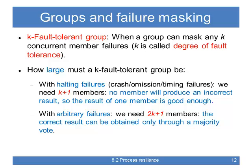The question is how many processes do you need to create a K fault tolerant group — a group that can mask any K concurrent member failures, where K is the degree of fault tolerance. If you only have halting failures — crash, omission, timing failures — you need K plus 1 members, because no member will produce an incorrect result, so the result of one member is good enough. However, as soon as your group members can start producing arbitrary results, you need 2K plus 1 members, because you'll have to vote, and the correct result can only be obtained through a majority vote.